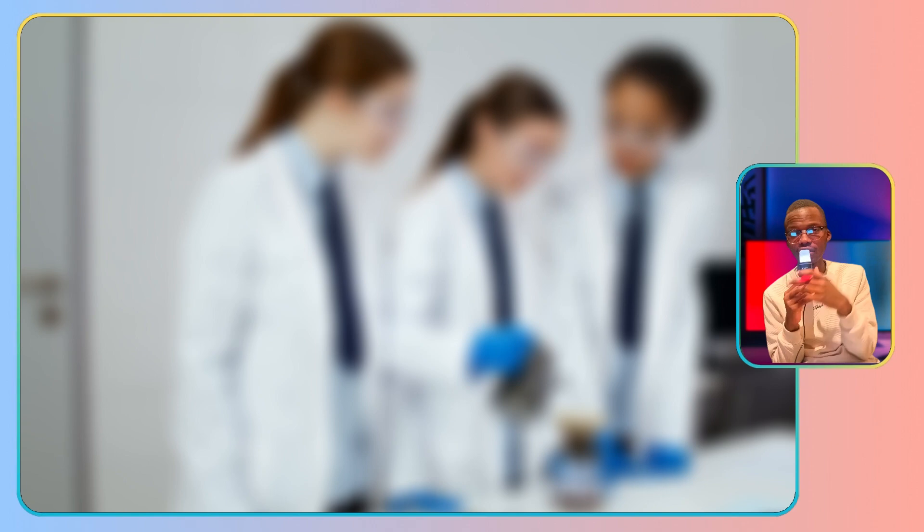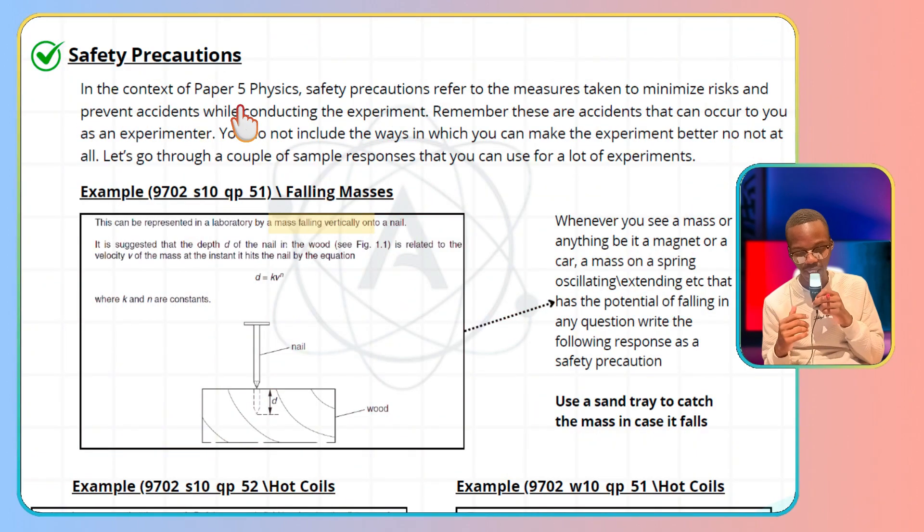safety precaution you should be thinking of. In the context of Paper 5, safety precautions refer to the measures you must take to minimize risks and prevent accidents while conducting the experiment. Remember, these are accidents that